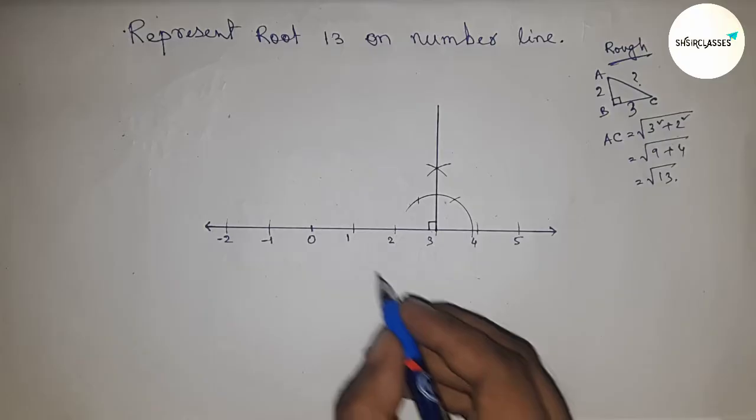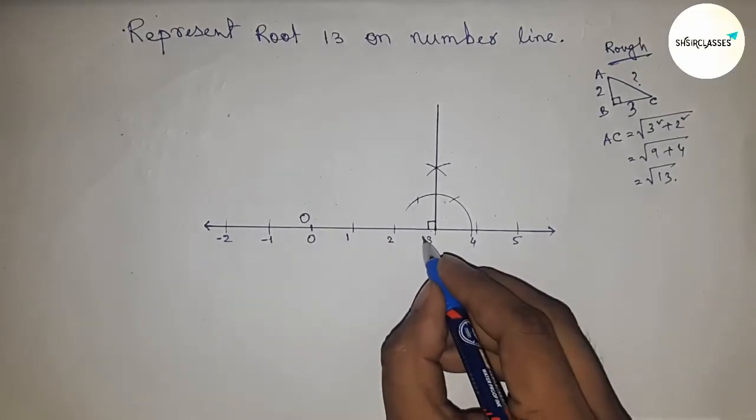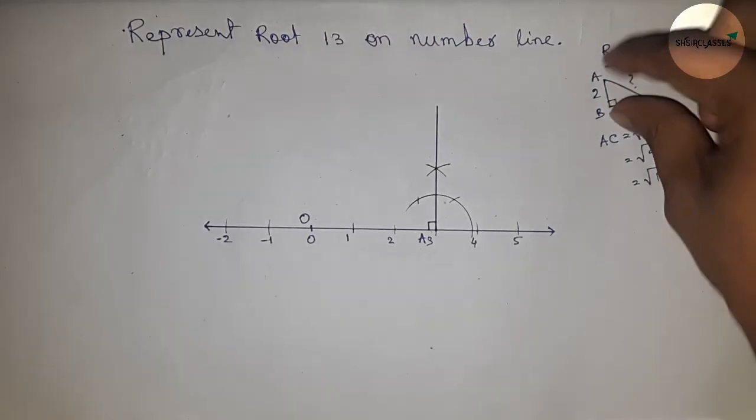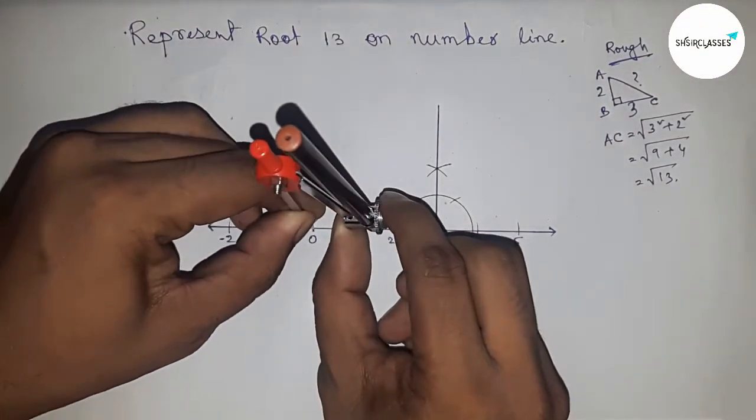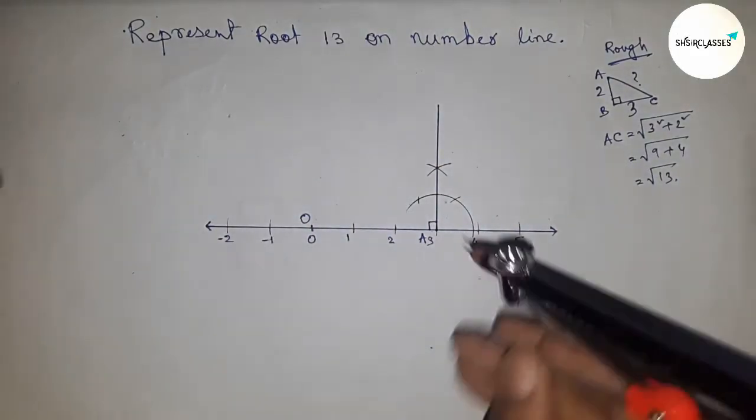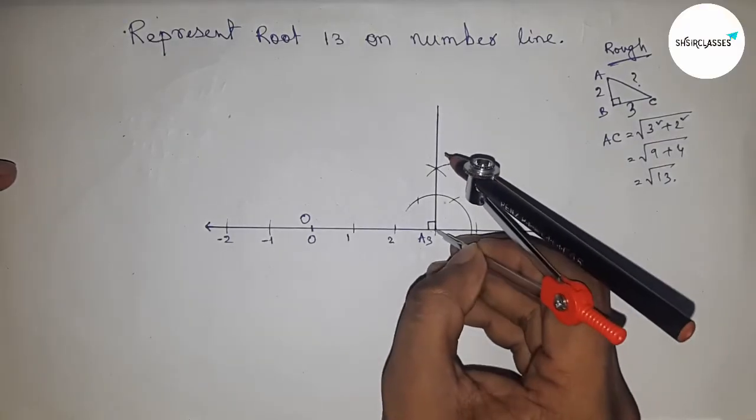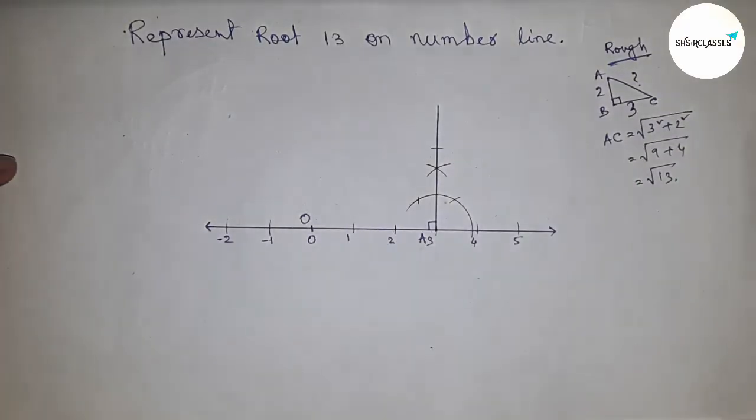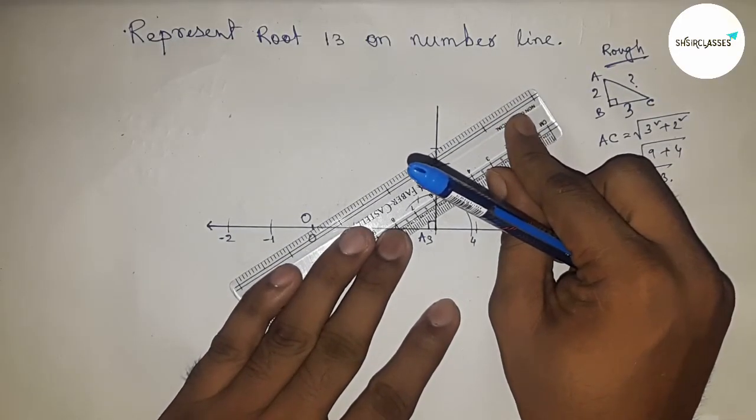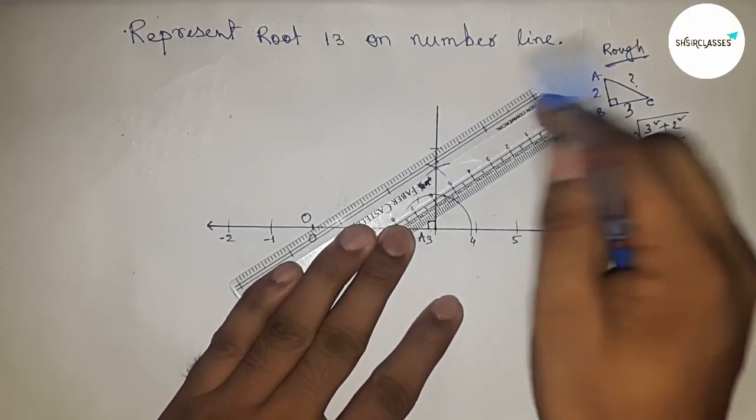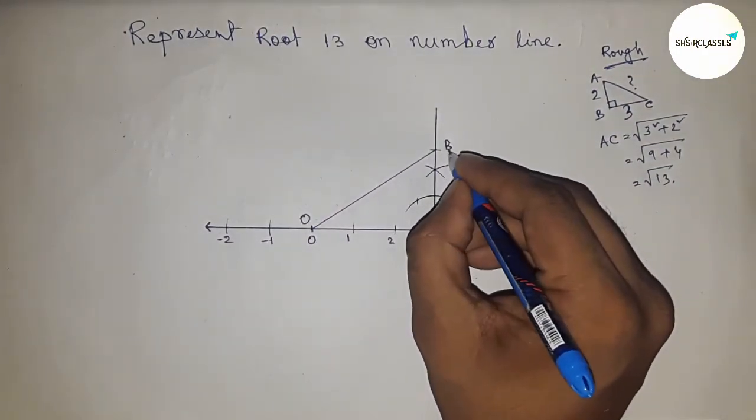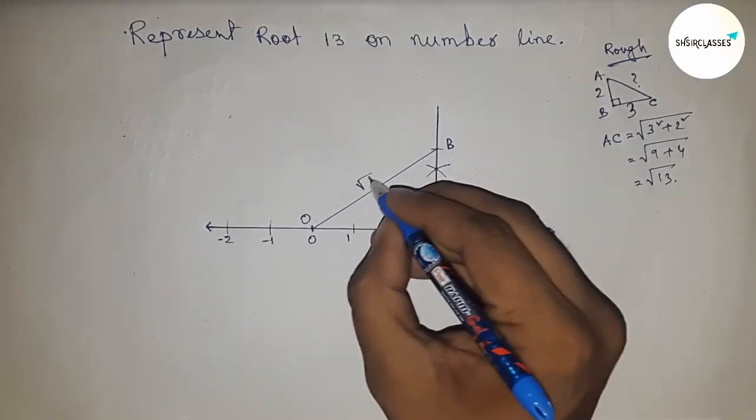This is point O and this is point A. Next, take the length between any two numbers, zero to two, with the compass and put it here to cut the line. Then join this to get the hypotenuse. This is point B, and the hypotenuse OB is obviously root 13.